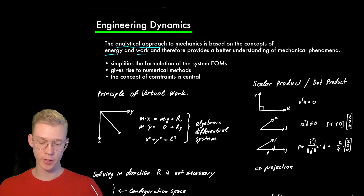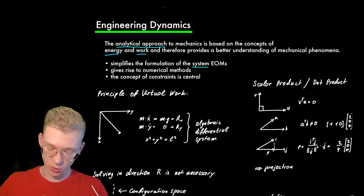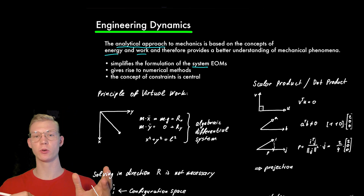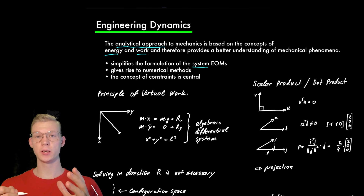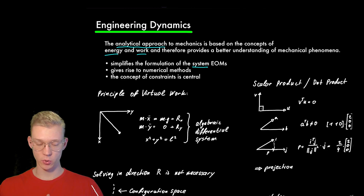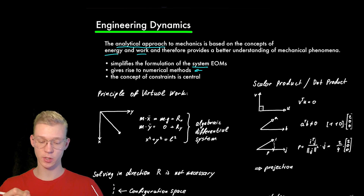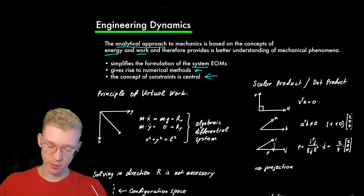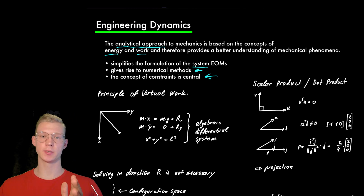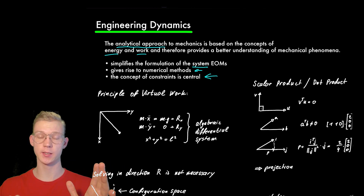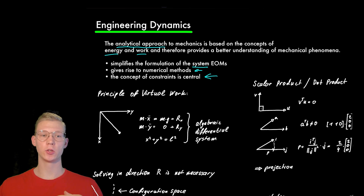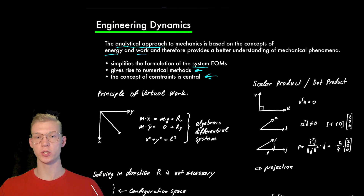We have three main points. The first one is that it simplifies the formulation of the system equations of motion. The most important part here is 'system', because we not only have one body moving in 3D space, but multiple bodies that are coupled with each other and can perform different motions. The second is it gives us the option to use numerical methods to solve those equations of motion. And the most important part is that the concept of constraints is central — we're actually using the constraints to our advantage to get the equations of motion.